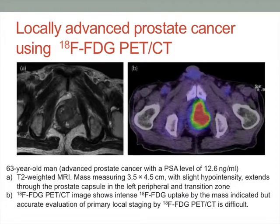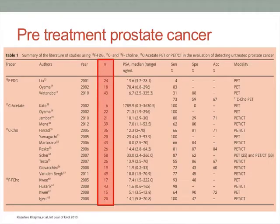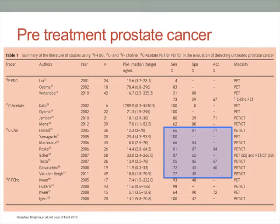An illustrative case: a 63-year-old patient with a PSA of 12.6 for local staging. The left image is a T2-weighted MRI showing extension of tumour through the peripheral and transition zone on the left side, giving good anatomical information. The right image is a fused CT PET-FDG. While the PET-CT is relatively obvious in this gross example, anatomical information is still difficult to obtain, and uptake in the bladder would make it even more challenging. Studies using various tracers over the past 10 years show small numbers with variable sensitivities and specificities. FDG is not very helpful; acetate, choline, and fluorocholine all show variable results.